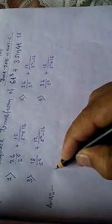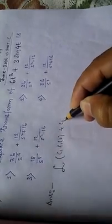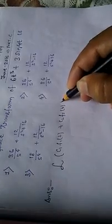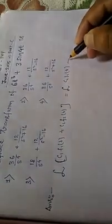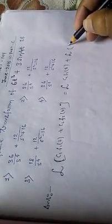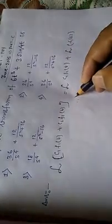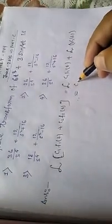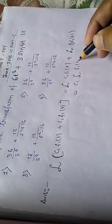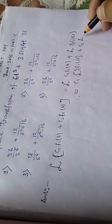Here we know that the Laplace transform of the combination of two functions is equal to the Laplace transform of the first function plus the Laplace transform of the second function. So C1 and C2 being constants will get out.